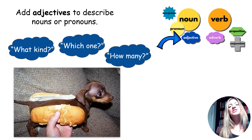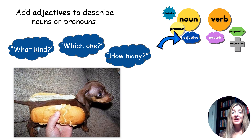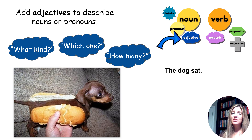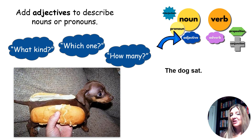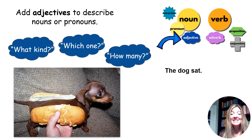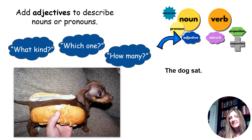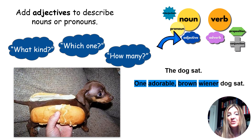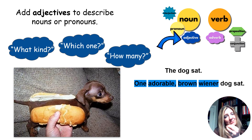So let's start with adjectives. Adjectives are words that describe nouns or pronouns. Adjectives answer the question: what kind, which one, how many? I give a short, simple sentence: 'the dog sat.' What kind of dog? The kids all say wiener dog. Which one? The tiny one, the brown one. How many? One. Let's describe all the things about this little dog. I usually have this up on my board where I'm writing their ideas, and then I present another option: 'one adorable brown wiener dog sat.' Adjectives are describing the subject part of the sentence.